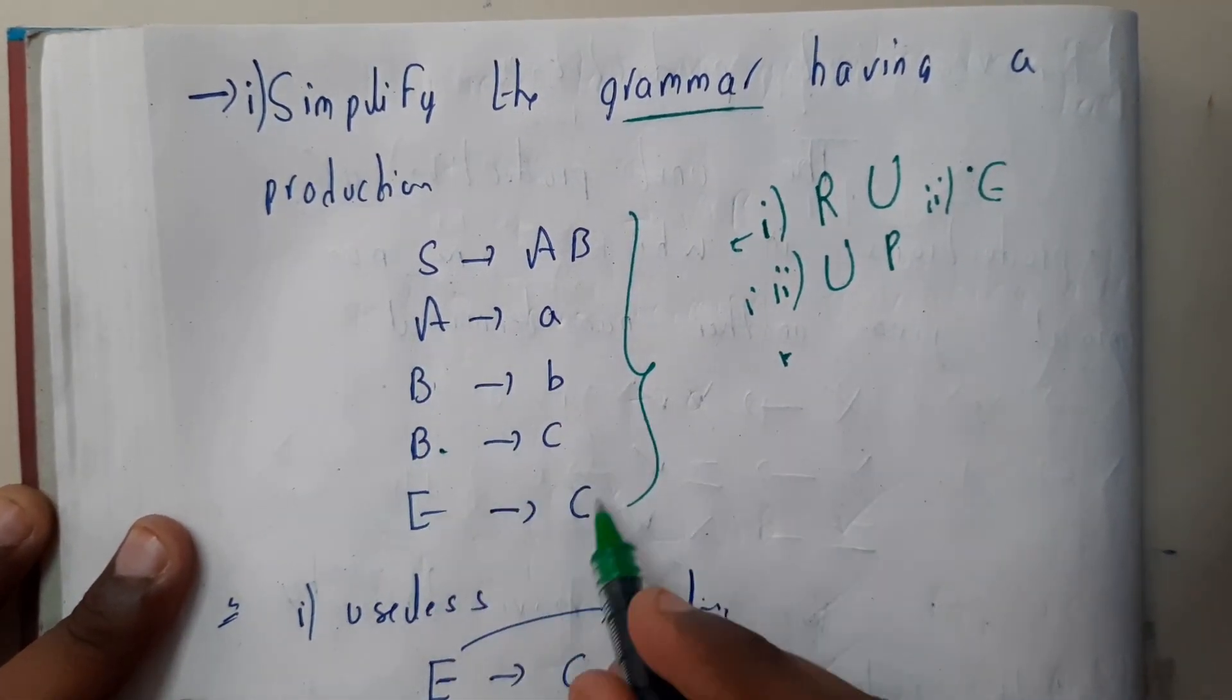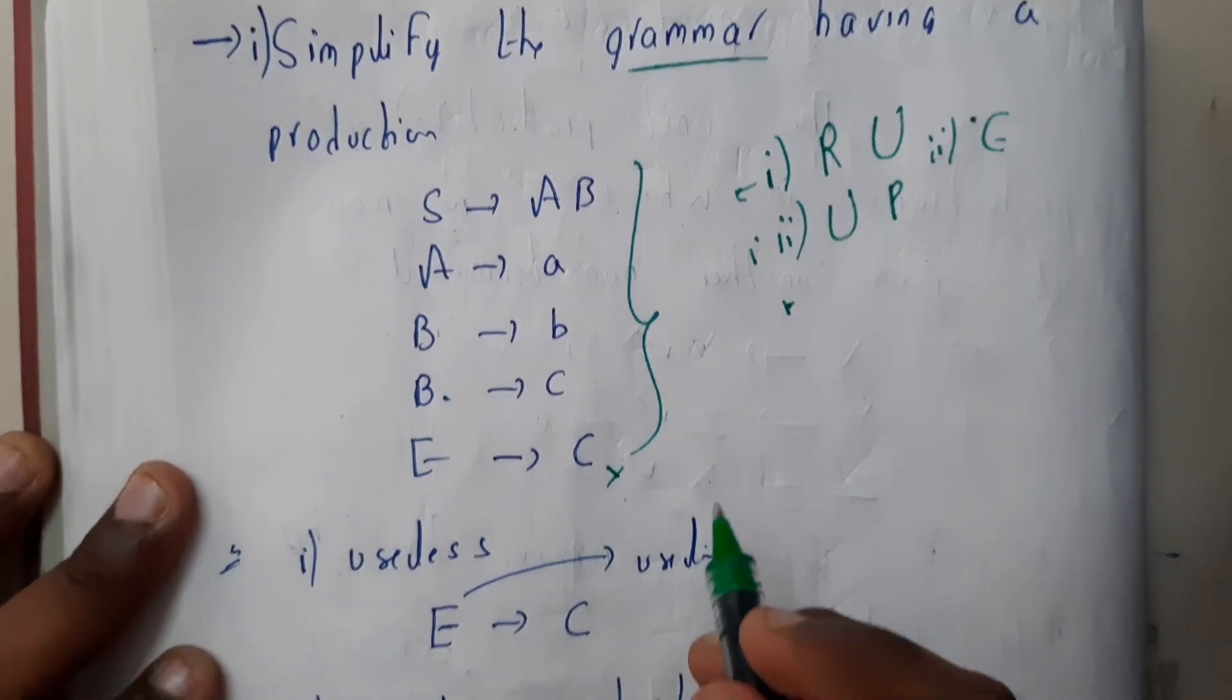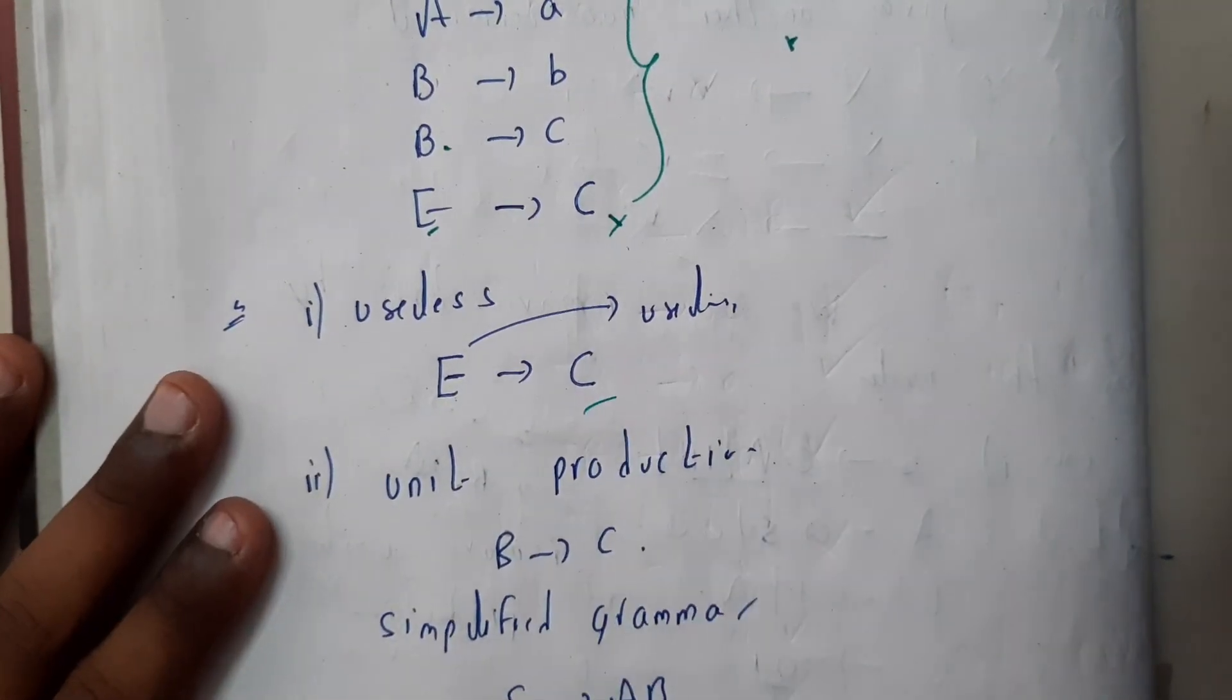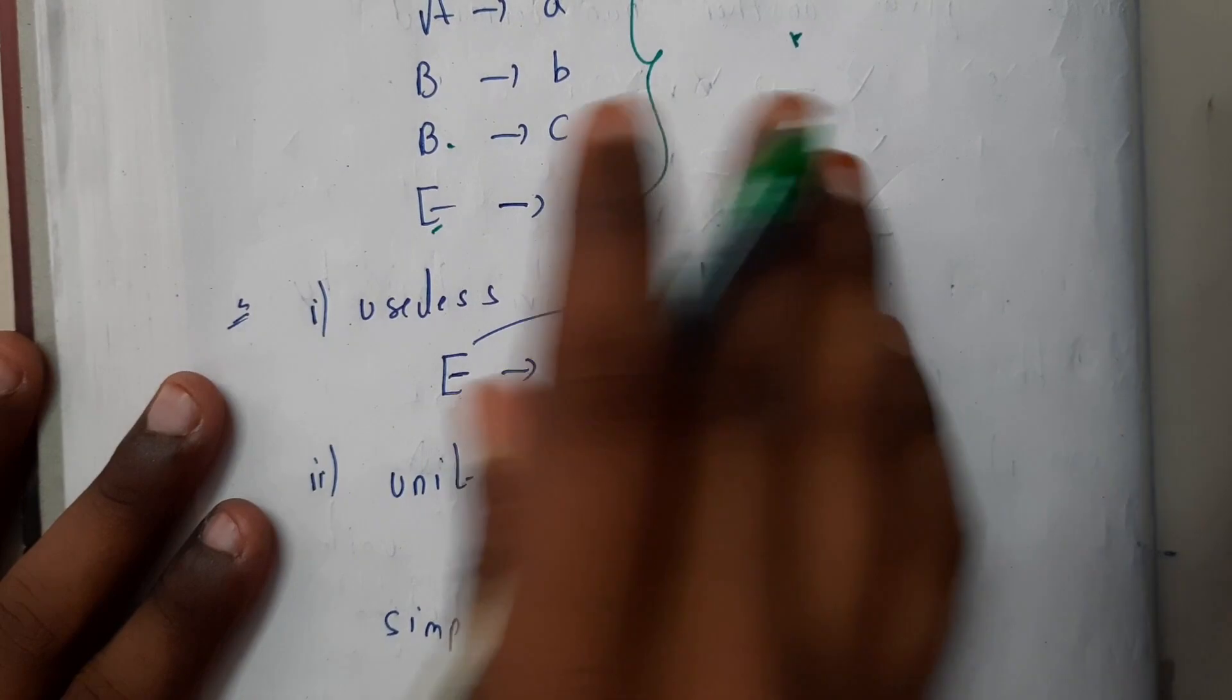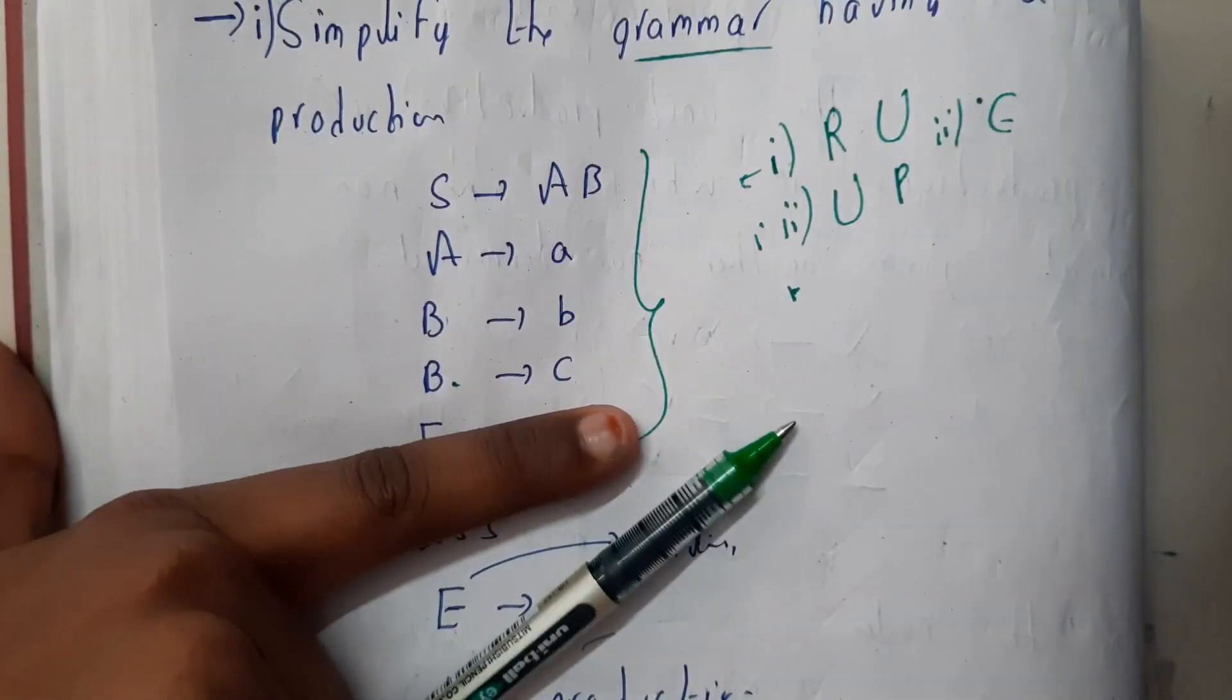So A, B, B - then what is the use of this E, guys? So now let us remove the useless symbol E. After that E is removed, are there any epsilon productions?